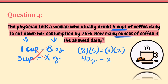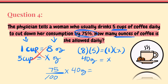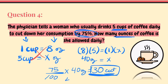But that's not what the question is asking. The physician told the woman to cut down her consumption by 75%, so: 75% of 40 ounces is 0.75 multiplied by 40, which equals 30 ounces — that is what she has to cut. So 40 ounces minus 30 ounces means she is allowed to drink 10 ounces.